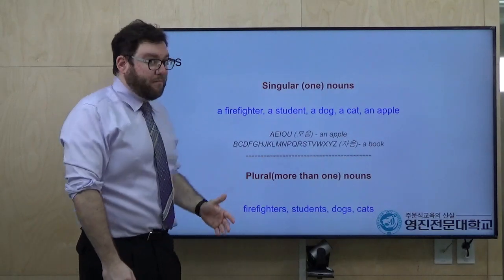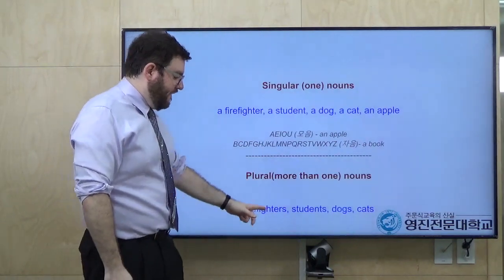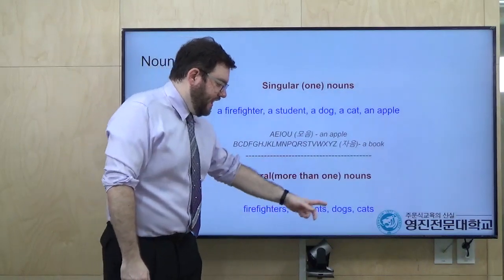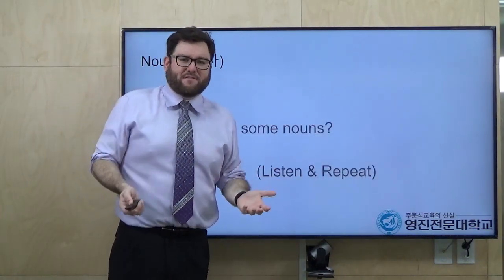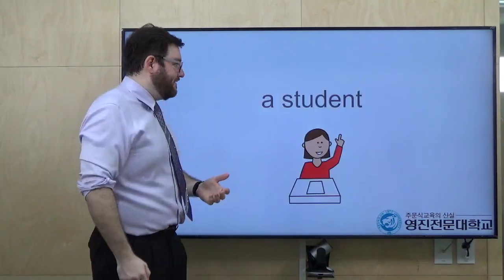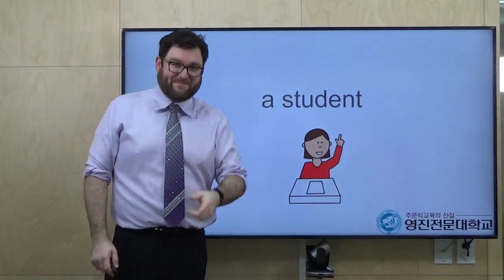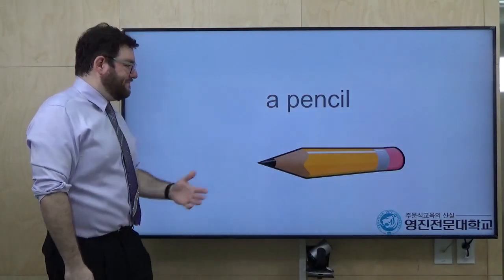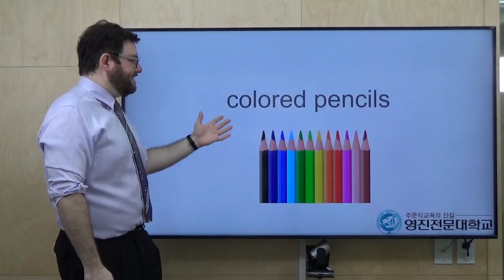And we have our plural nouns. For plural nouns we just add S — S 붙여도 돼요. Firefighters, students, dogs, cats — we just put the S at the end. So please listen and repeat: a student, one student, an apple, a pencil, colored pencils.